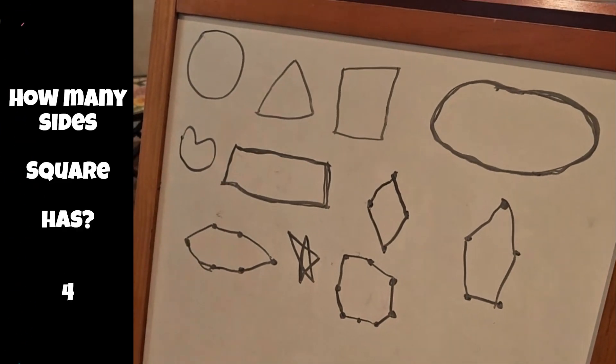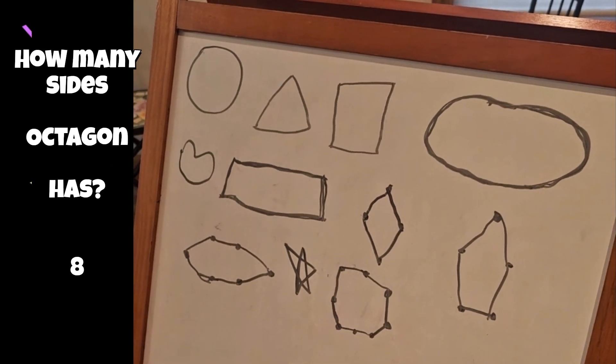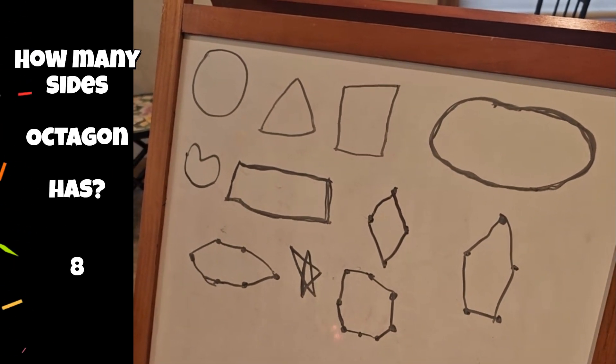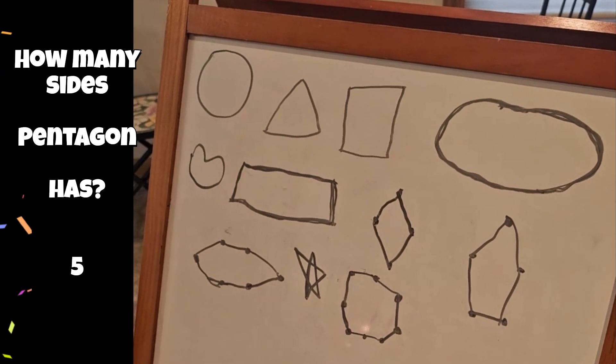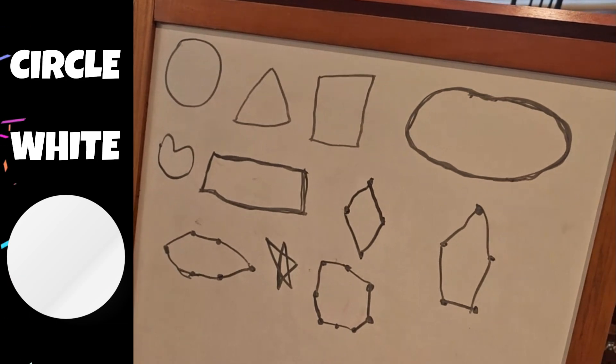How many sides does square have? Four. Okay. Rectangle? Four. Octagon? Eight. Pentagon? Five. Hexagon? Six. Okay. Great job, Sasha.